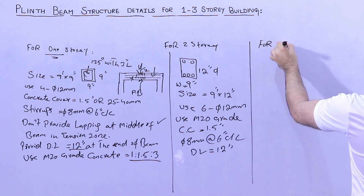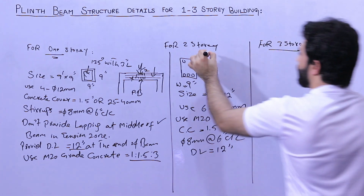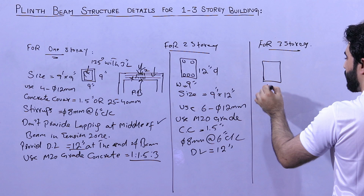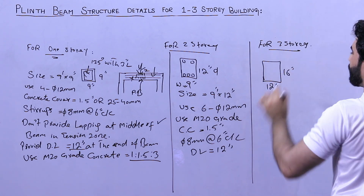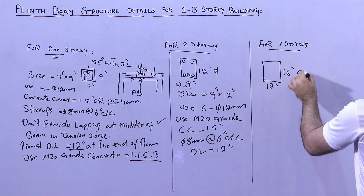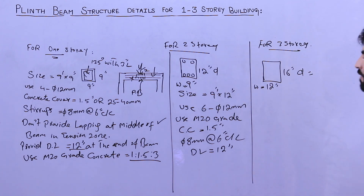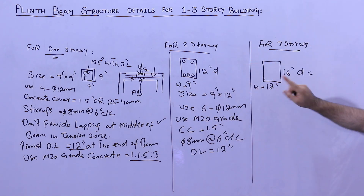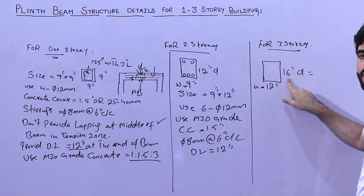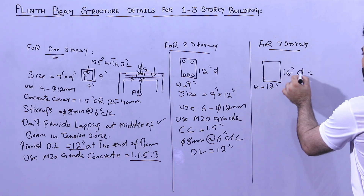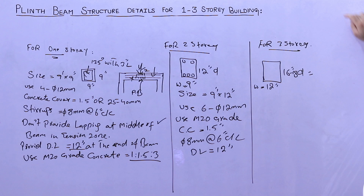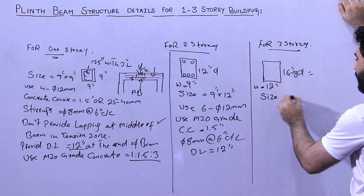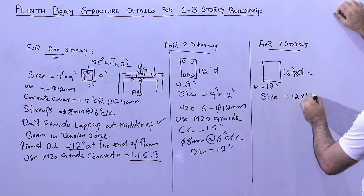Now let me guide you for three story — this is for residential building, not commercial. Use 12 inches by 16 inches: depth should not be less than 16 inches and width should not be less than 12 inches. For two story, the width was 9 inches and depth 12 inches, but here width is 12 inches and depth is 16 inches. Normally you can go up to 18 inches, so the size is 12 by 16 or 18 inches.